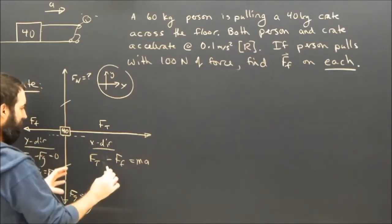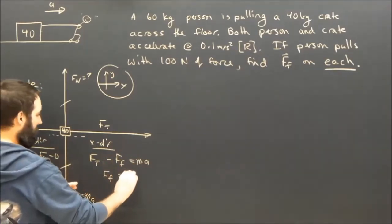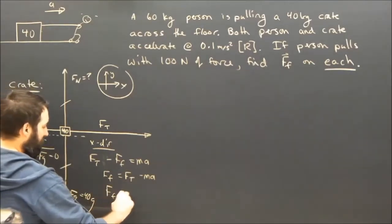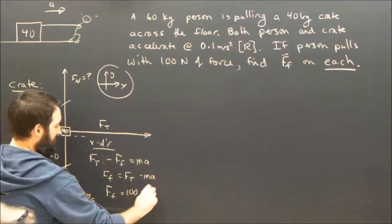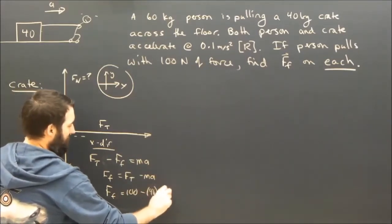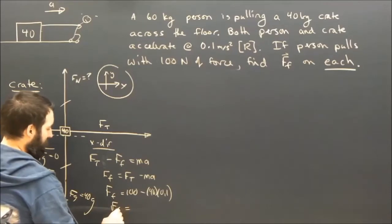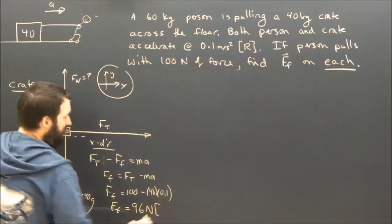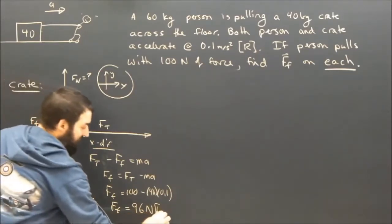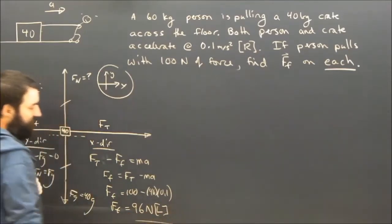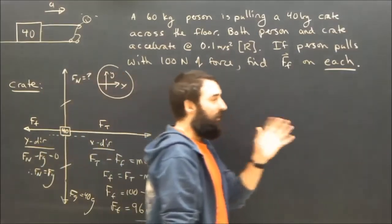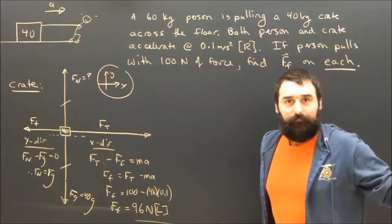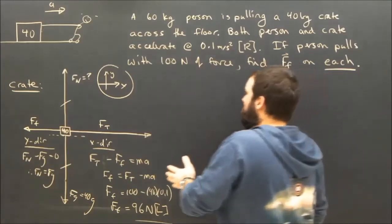And therefore the force of friction equals Ft minus Ma. And the force of friction will be 100 minus 40 times 0.1, which is 4, so the force of friction on the crate is going to be 96 newtons. It's clear that I understand it's to the left, but I should always put a direction in my final answer. So, the force of friction on the crate is 96 newtons to the left. That's pretty easy. What about the person?